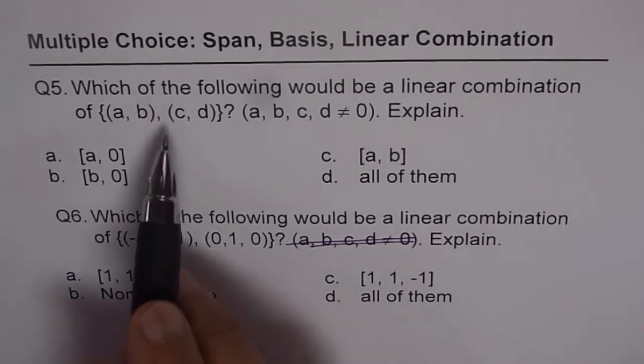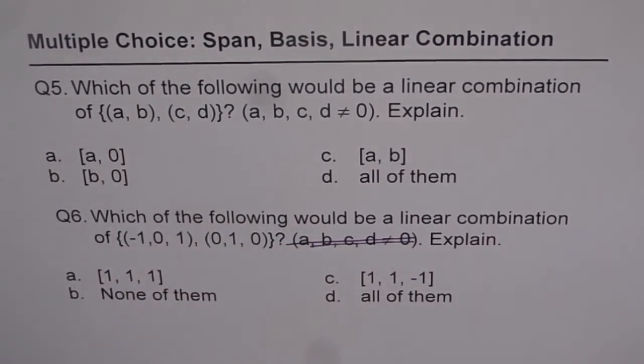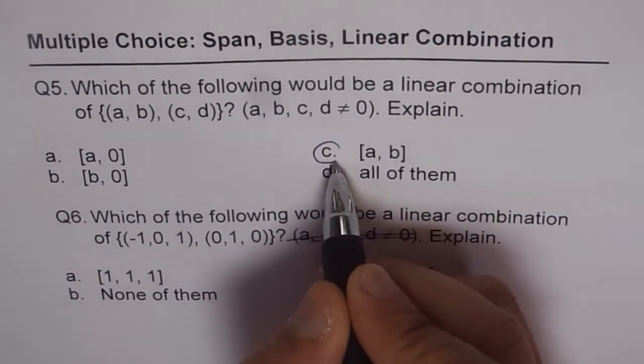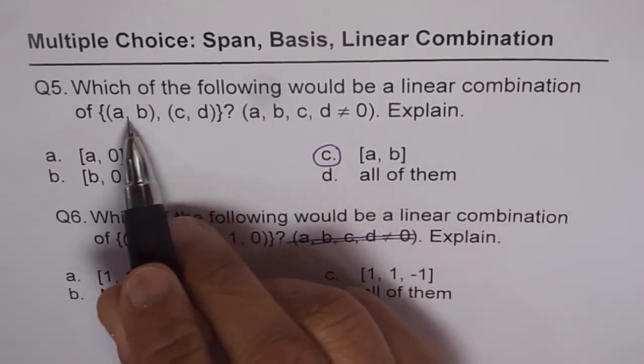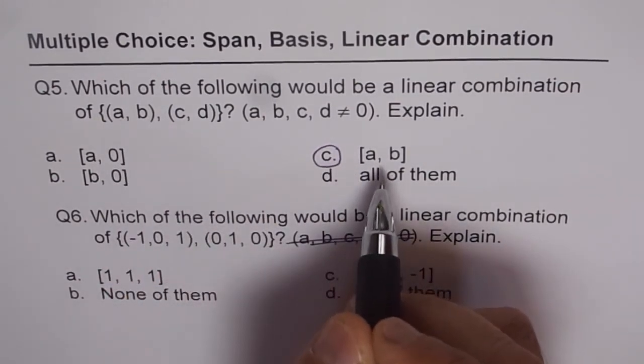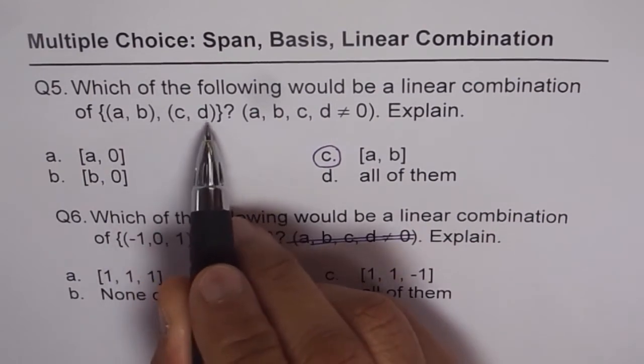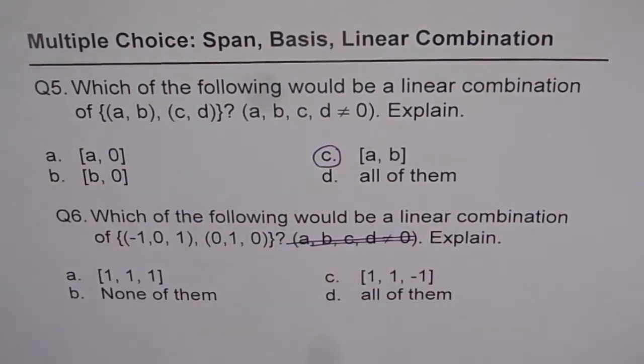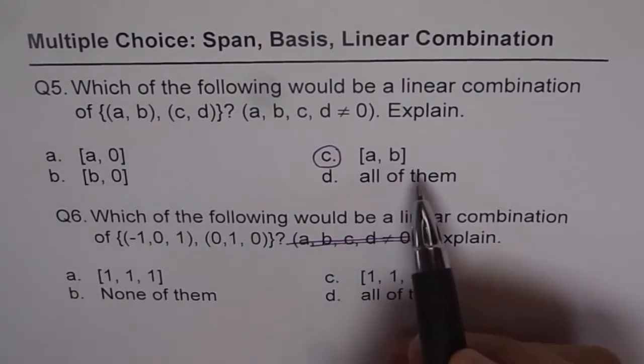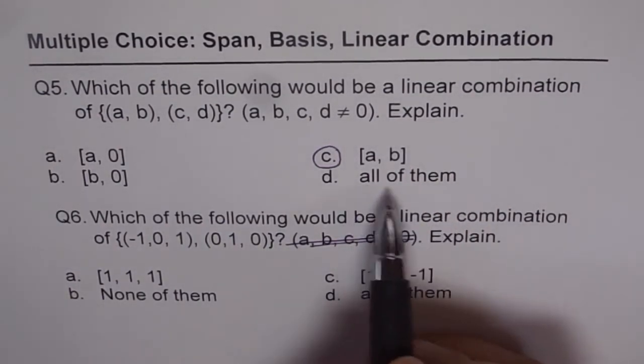If CD is a scalar multiple of AB, then they cannot span all of them. In that case, they can only span AB. That is why AB is the safe and correct choice. AB can span AB for sure, even if CD is a scalar multiple of AB. So, in this question, the choice will be AB and not anything else or all of them.